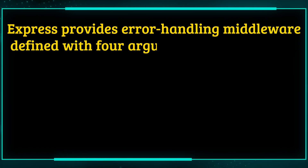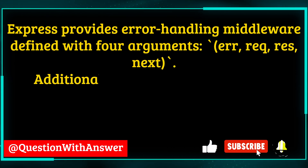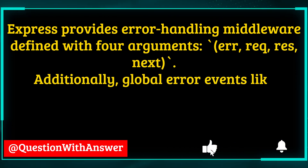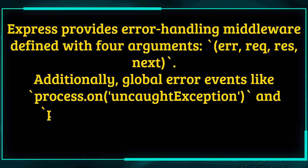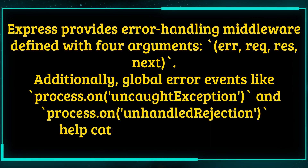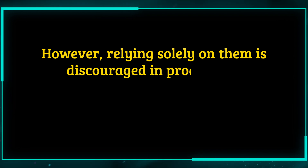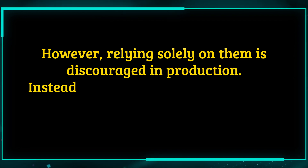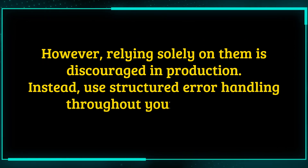Express provides error handling middleware defined with four arguments: error, req, res, next. Additionally, global error events like process.on('uncaughtException') and process.on('unhandledRejection') help catch unhandled errors. However, relying solely on them is discouraged in production. Instead, use structured error handling throughout your codebase.